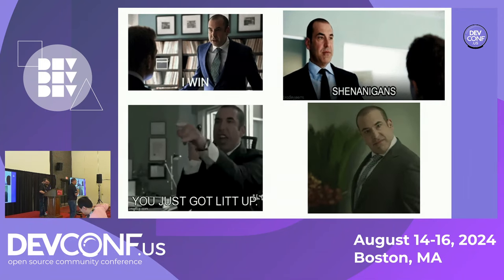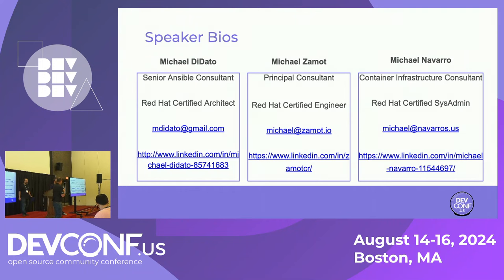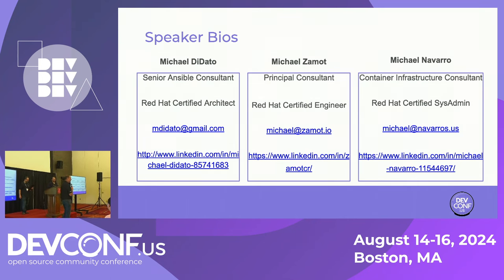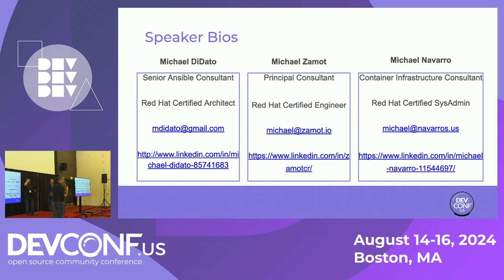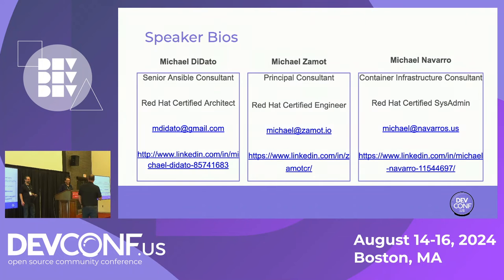Now that we've gotten that taken care of, I want to tell you a little bit about myself. I am Michael Dodato, a senior Ansible consultant, been with Red Hat a little over two years now, been in the IT space for about 15 years. I am a certified architect. Please feel free to reach out to me on LinkedIn or email. I reside in Tampa, Florida, so any Boston sports fans here, thank you for giving us Tom Brady.